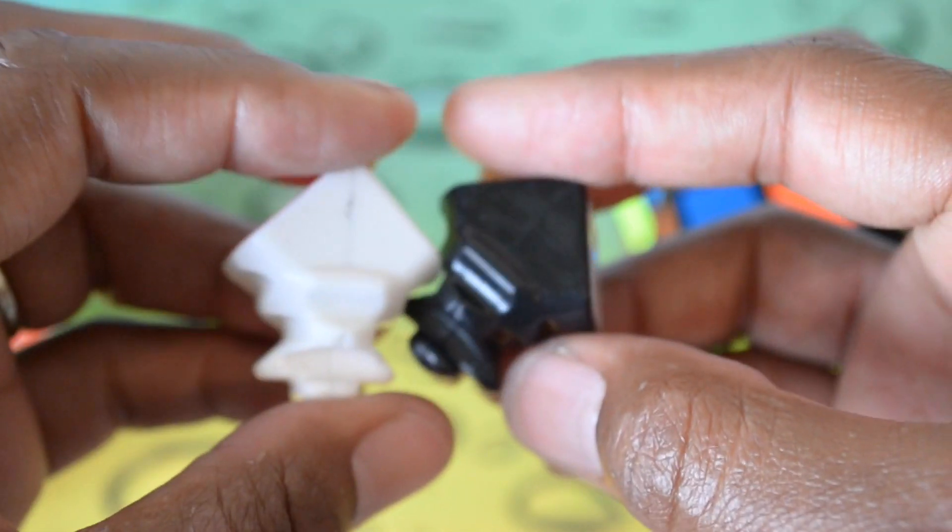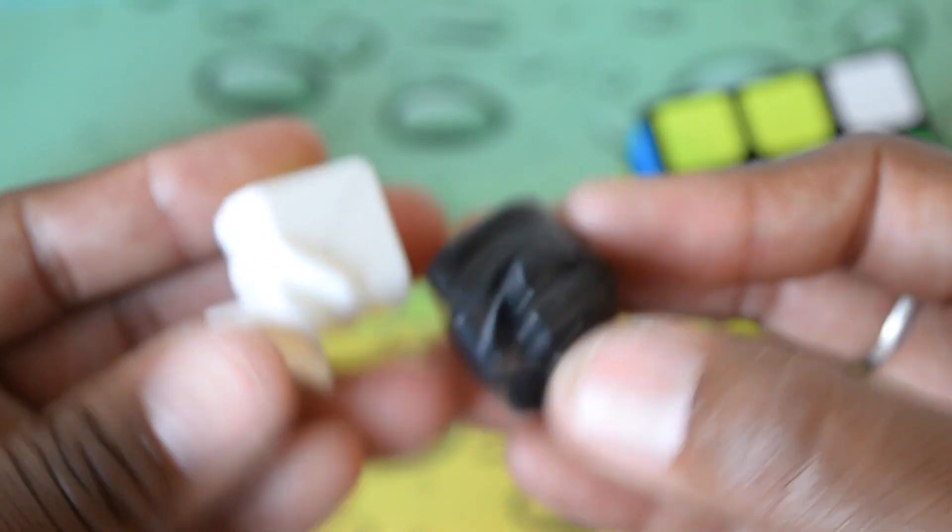And this is an edge piece from the Lightning. Yeah, they're about the, yeah, they're the same, they're the same cube. Well, let's do corners. Can't forget about corners.